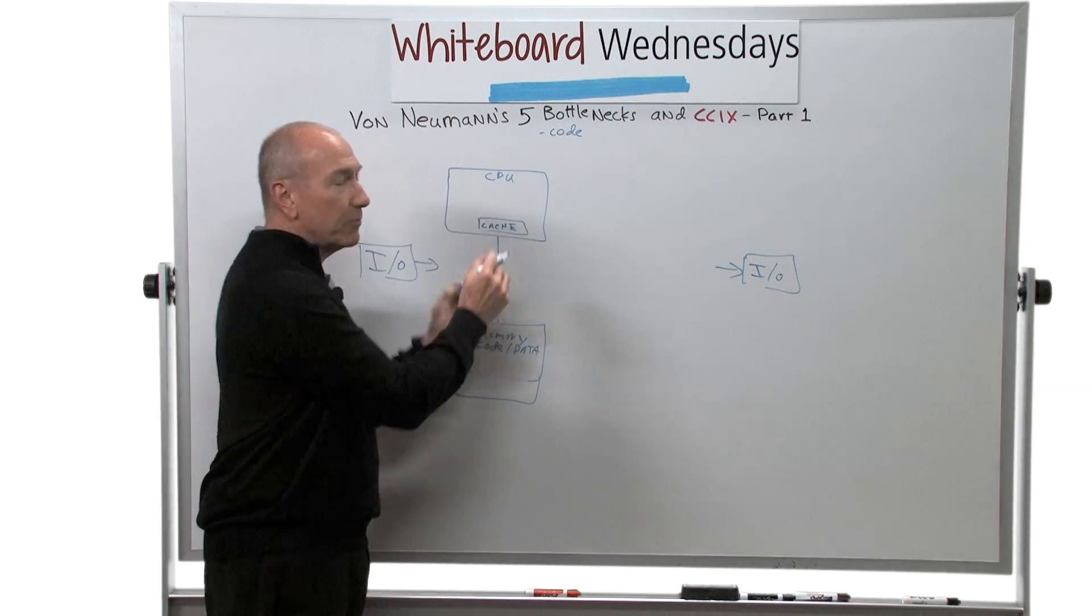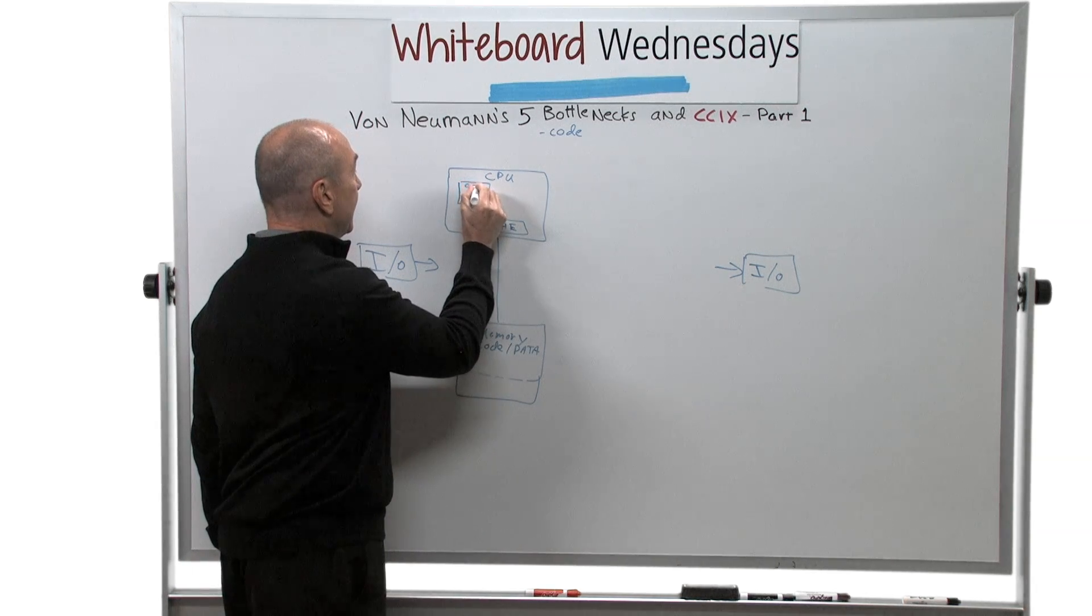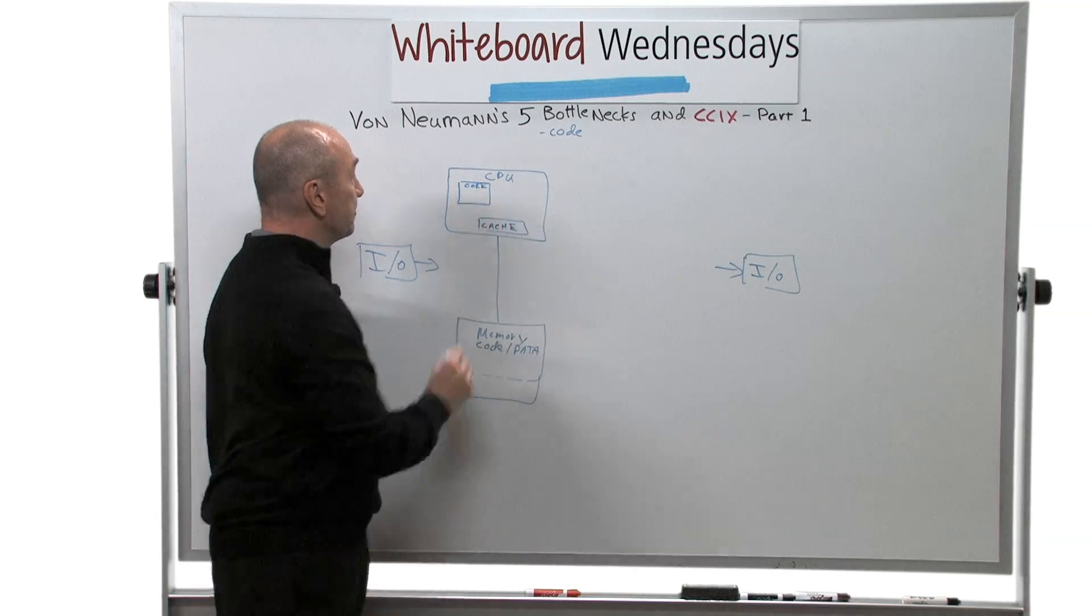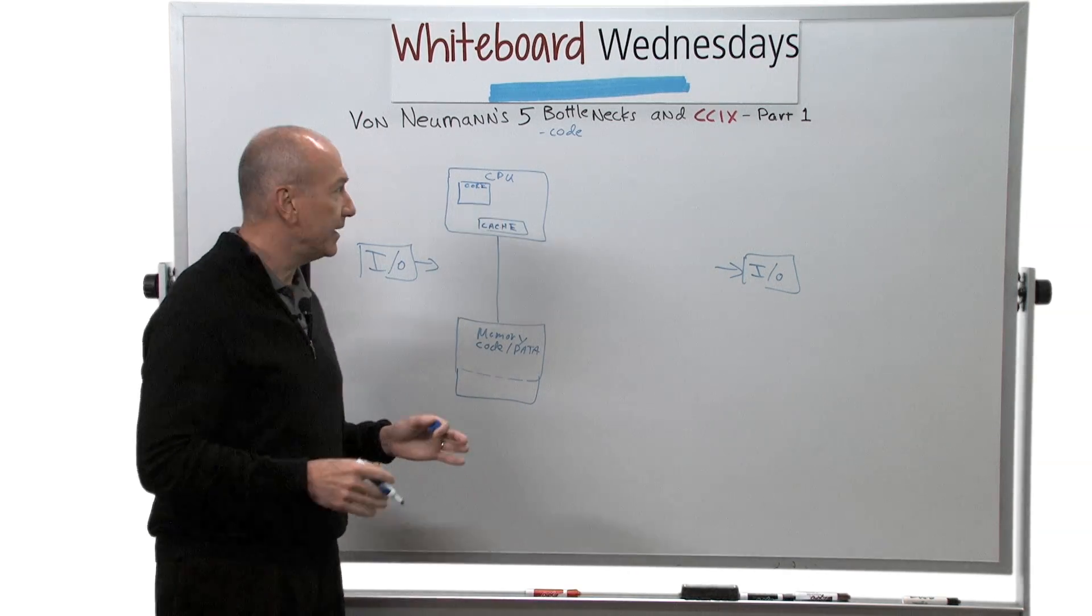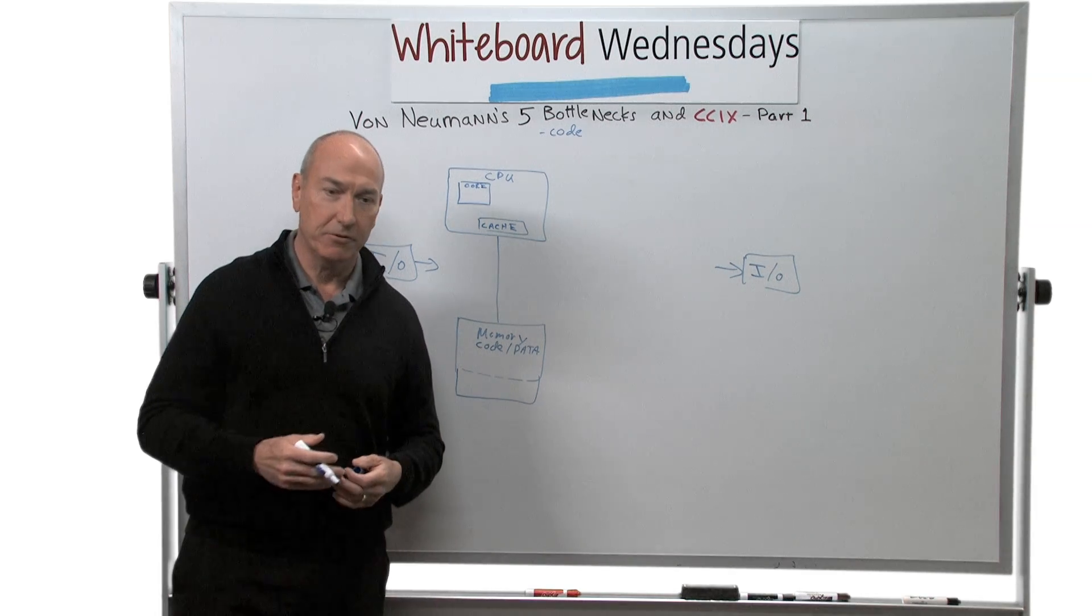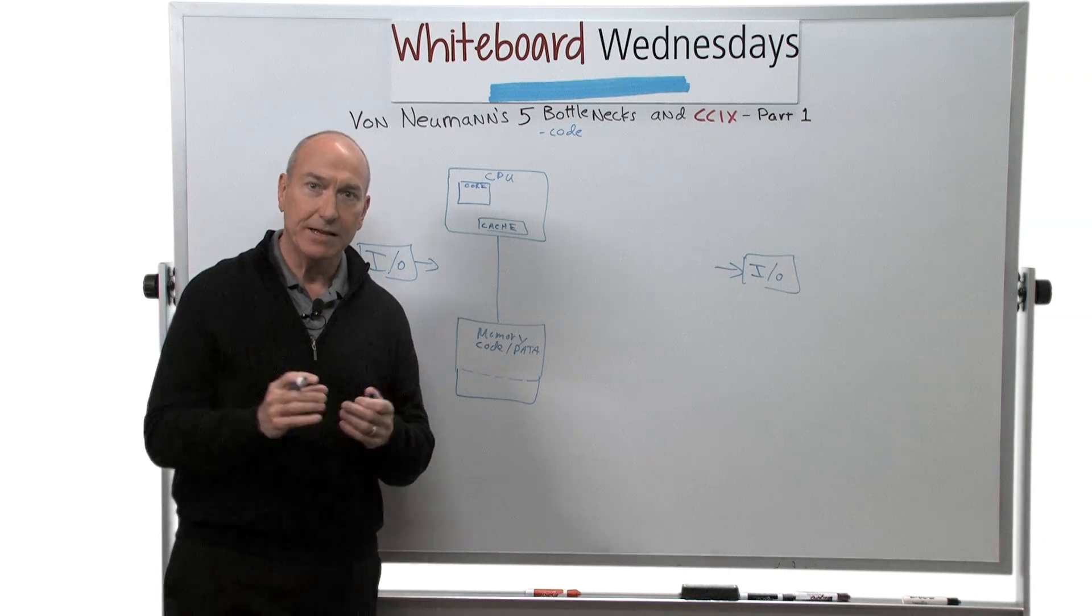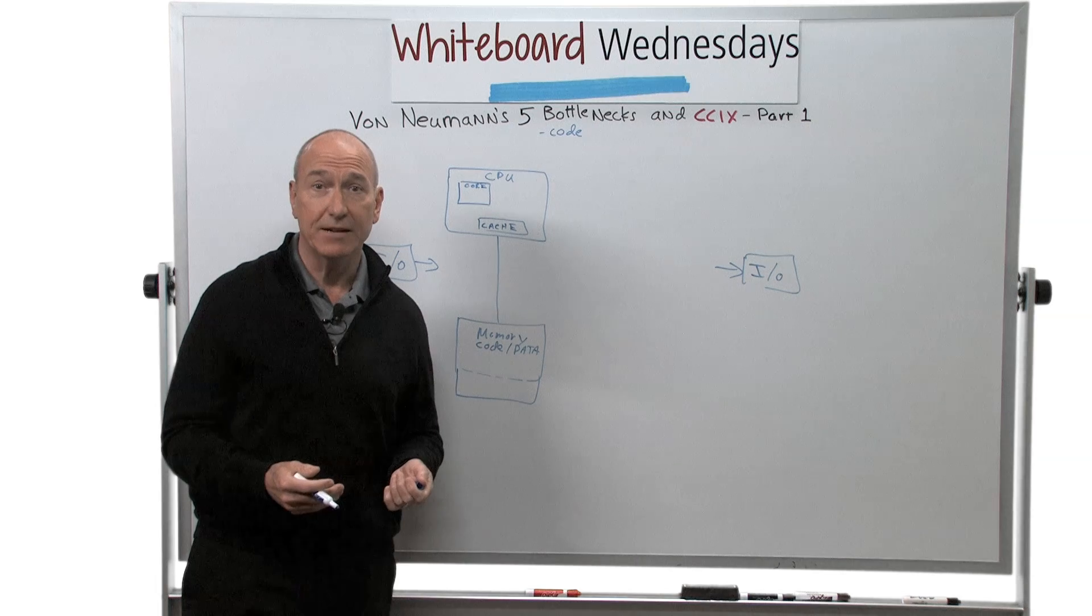And as long as we're describing what's in the CPU, let's also put in a box here for the processing element, and we'll just call it the core. So this architecture then took off through the 70s, 80s, 90s, and everything went great, because we were riding this wave fueled by Moore's Law, where not only were circuits getting denser, but also the CPUs were getting faster and faster and faster.